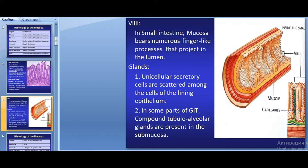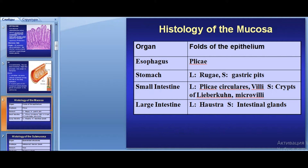The mucosa can also contain glands. There are unicellular glands — unicellular secretory cells present within the epithelium. Another type is multicellular glands. In some parts of the digestive tube, compound tubular-alveolar glands are present, with secretory portions situated in the submucosa.